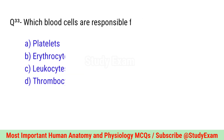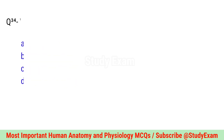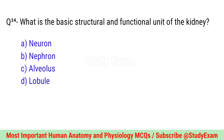Question number thirty-three. Which blood cells are responsible for immunity? Correct option is C. Leukocytes.